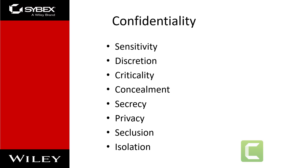Numerous countermeasures can help ensure confidentiality against possible threats. They include encryption, network traffic padding, strict access control, rigorous authentication procedures, data classification, and extensive personnel training. Confidentiality and integrity depend on each other — without object integrity, confidentiality cannot be maintained.